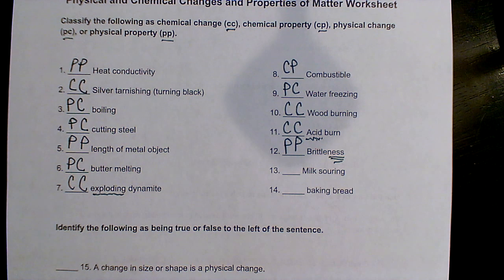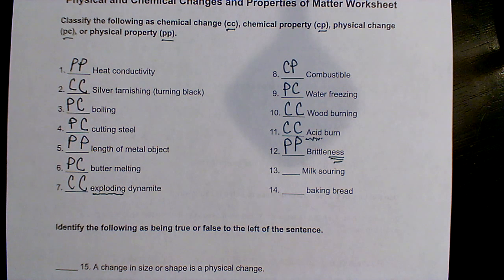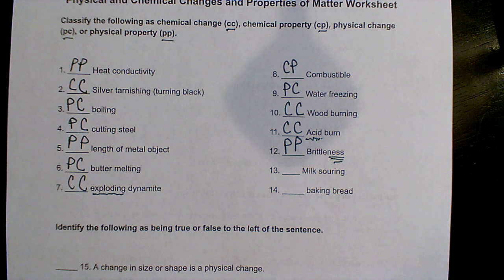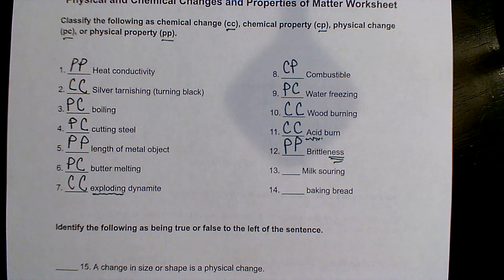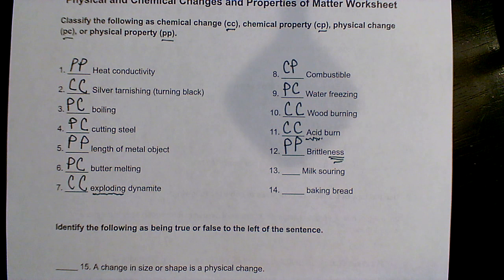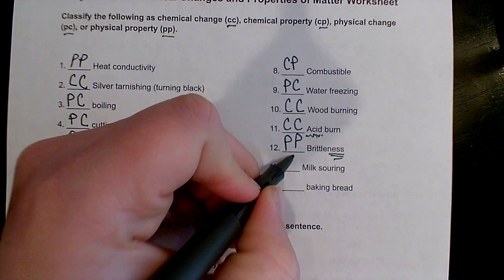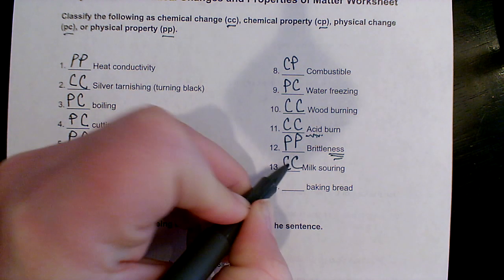Milk souring — if you let your milk sour, it's going to produce an odor, which is one of our clues of a chemical change. It might change color and turn yellowish — another clue. It might get lumpy, forming a precipitate, which is also one of our clues of a chemical change. So milk souring has definitely got to be a chemical change.